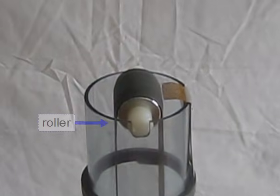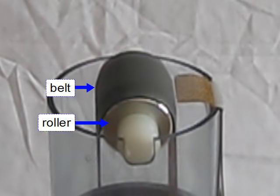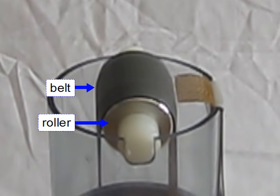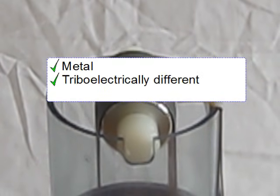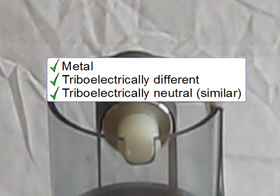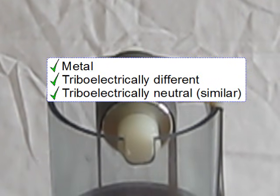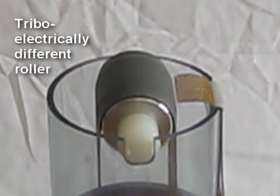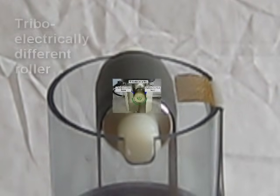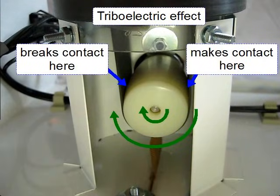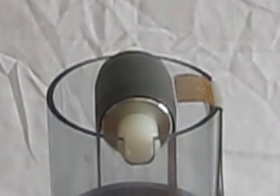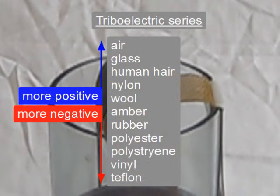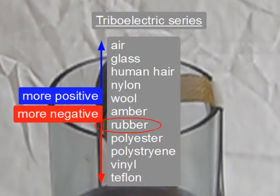Inside the dome at the top, there's another roller interacting with the belt. In most home-use or school-lab Van de Graaff generators, this roller is either metal, something that's tribo-electrically different than the belt, or something that's neutral tribo-electrically with respect to the belt. Remember that we charge the bottom roller by using the triboelectric effect. We can do the same thing with the top roller, but we want the opposite charge. To do that, we look at the triboelectric series table.